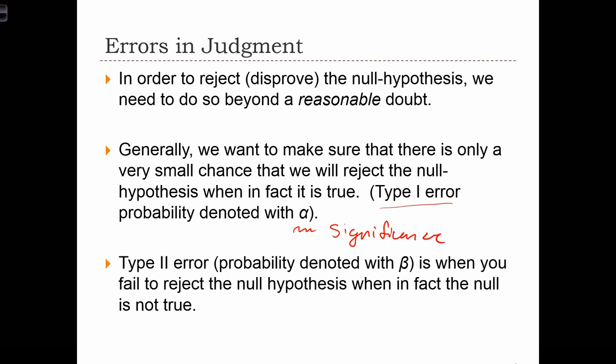We aren't going to be satisfied if there's just a little bit of evidence to suggest that the null hypothesis is false. We want to have an overwhelming amount of evidence that the null hypothesis is false before we reject it, in which case we want to have just a very small chance of falsely rejecting the null hypothesis. In the court case analogy, we want a very small chance of sending an innocent person to jail.